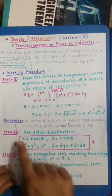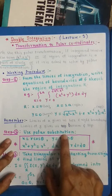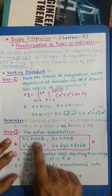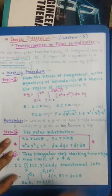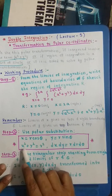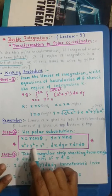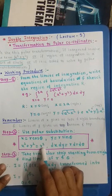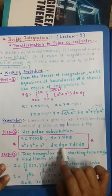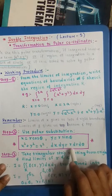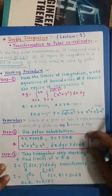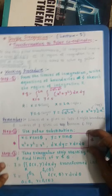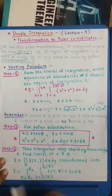In step two we use polar substitution: x equals r cosθ, y equals r sinθ, x squared plus y squared equals r squared, and dx dy equals r dr dθ. Remember these four substitution values.